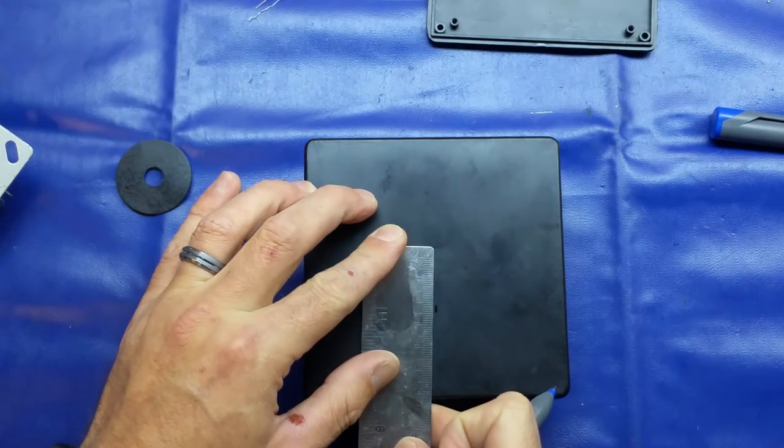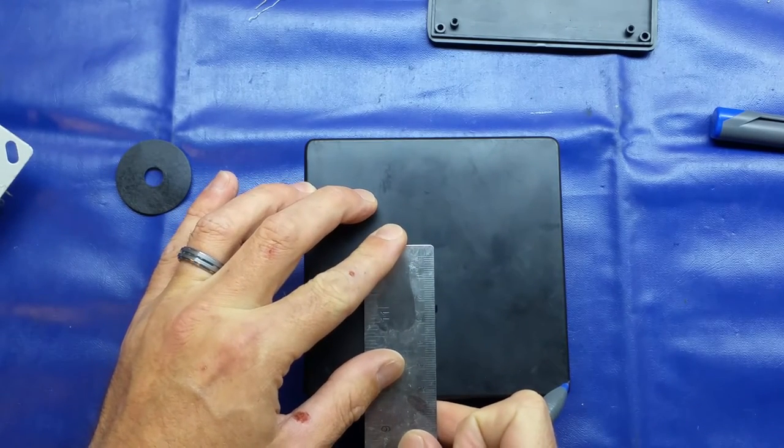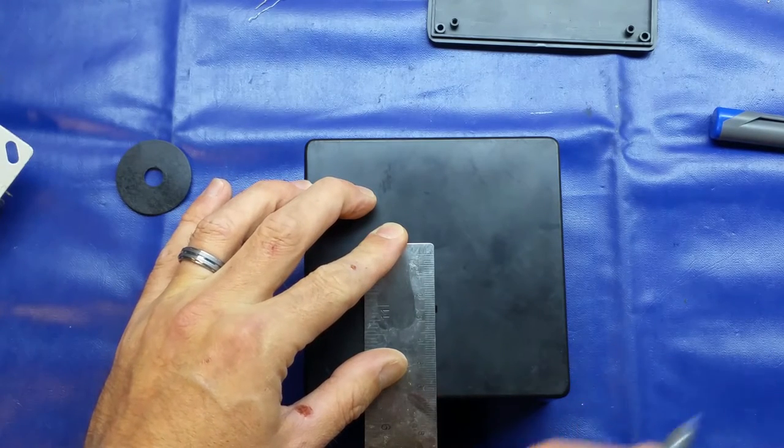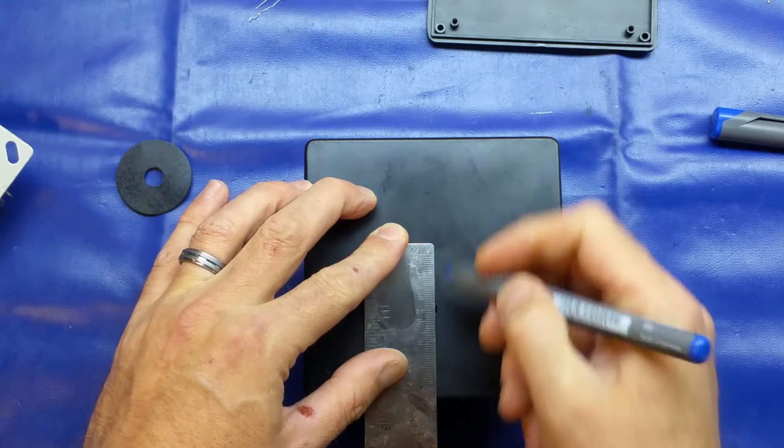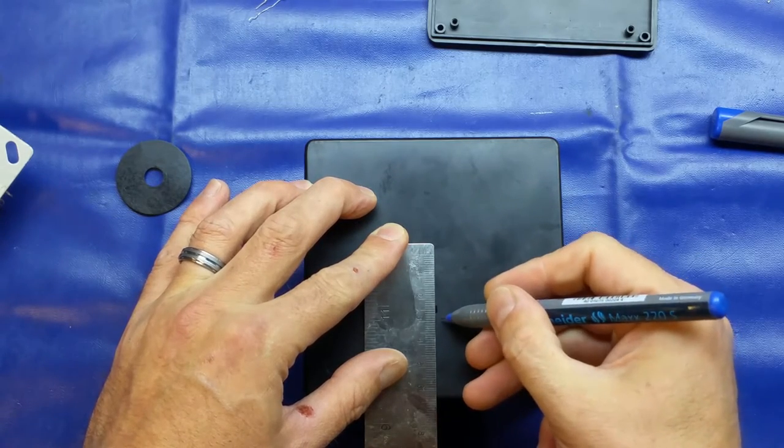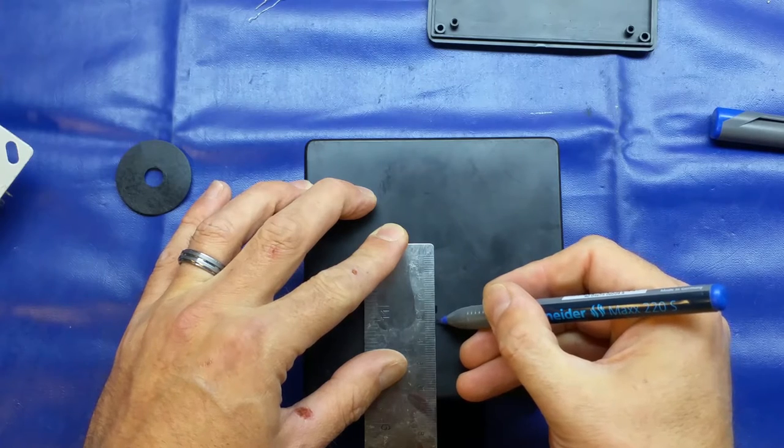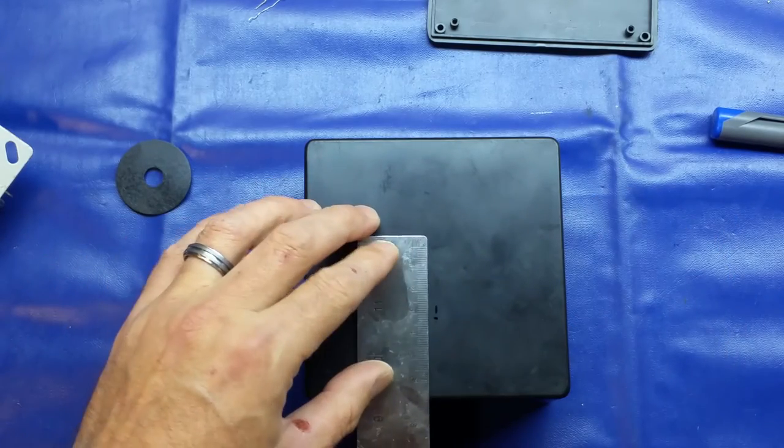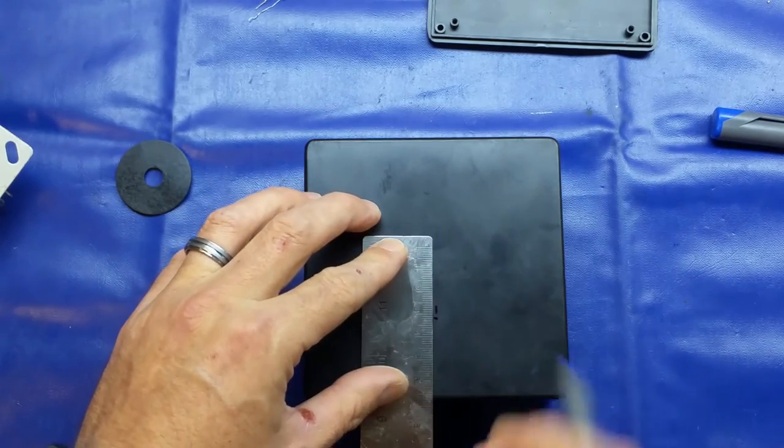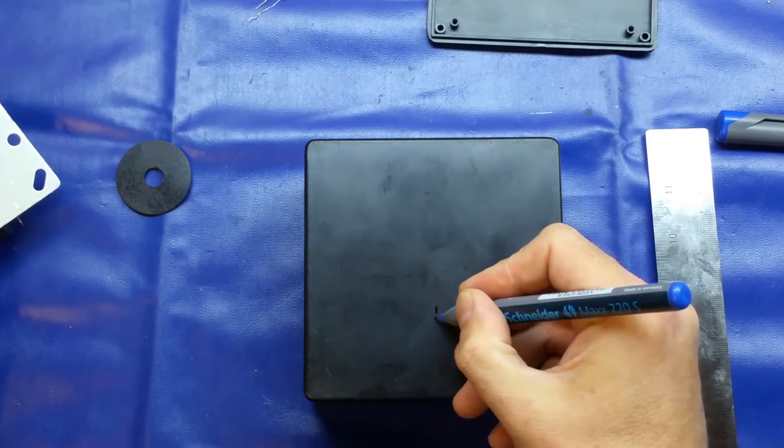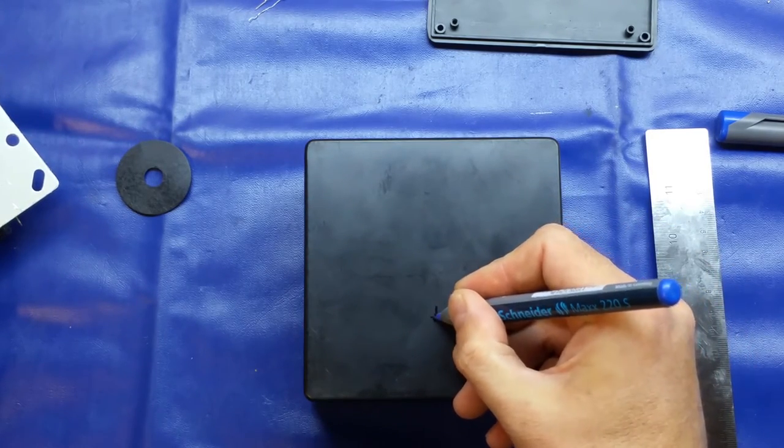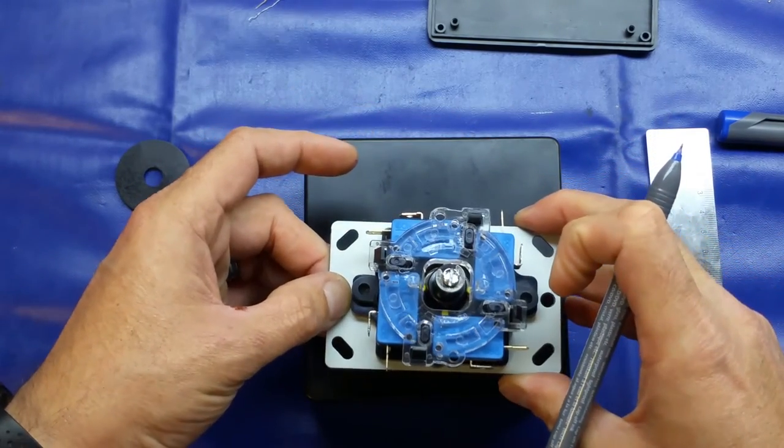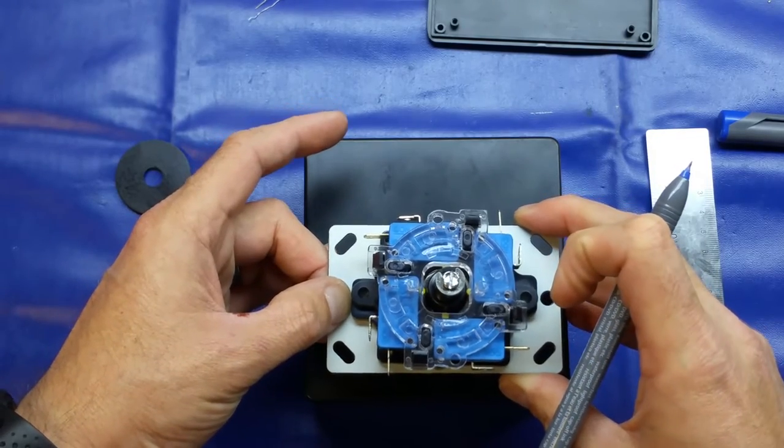It's really difficult to see this, but because I moved across three centimeters, it's going to be halfway. So the drill point will be this cross here. If I just eyeball that by putting the joystick on there, you can see that it's fairly central.